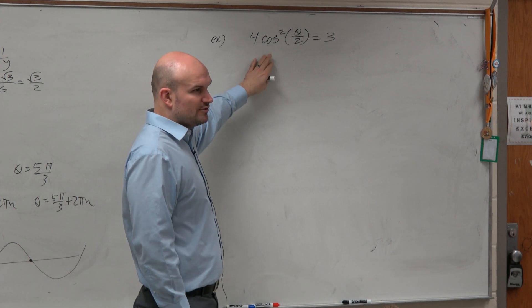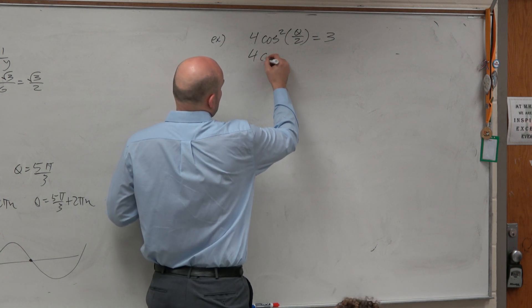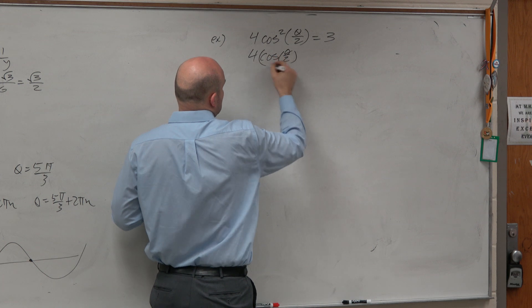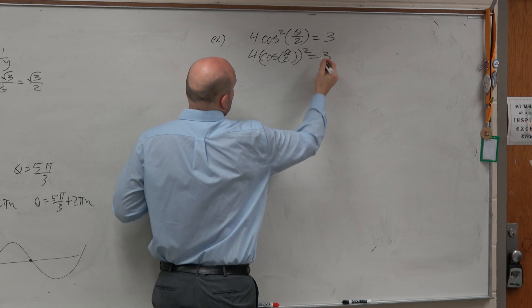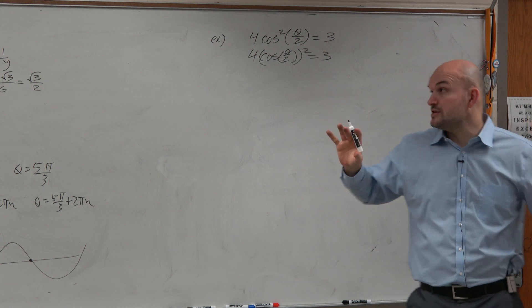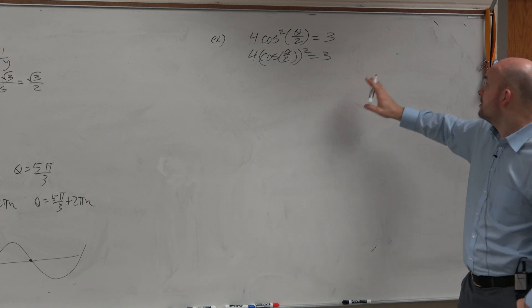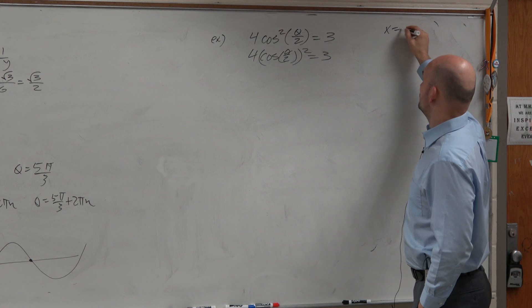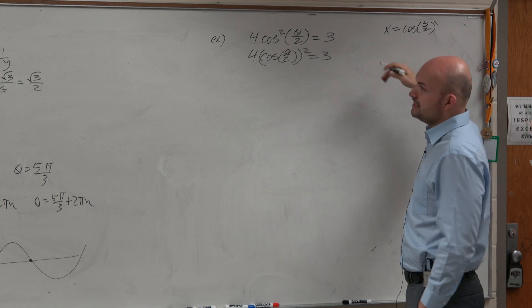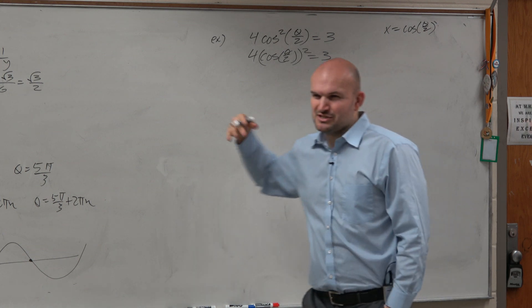So let's go ahead and rewrite this a couple different ways. First of all, I think sometimes this gets a lot of students confused as far as the notation goes. So one thing we can do is say x equals cosine of theta divided by 2. Because to me, cosine of theta divided by 2 looks confusing, so I'm just going to use a simpler variable as x.